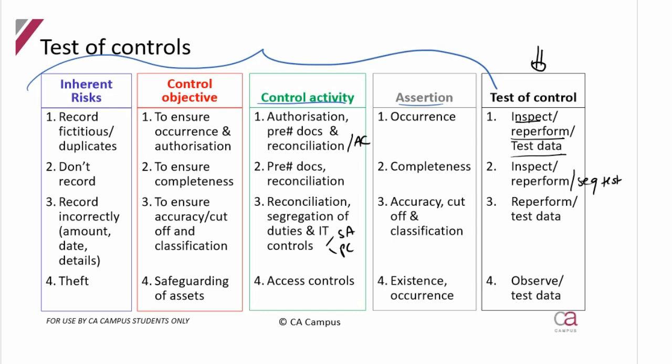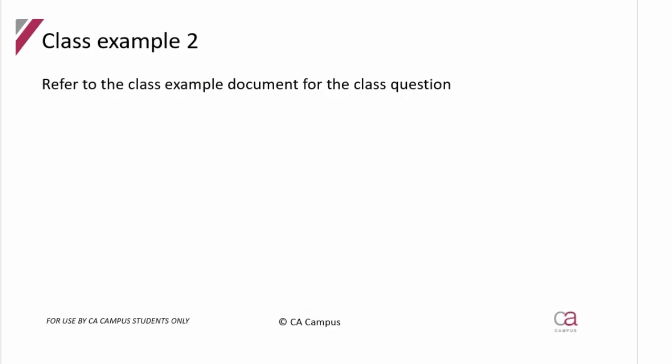For the risk of theft, the controls are safeguarding of assets, physical access controls, and logical access controls to protect information. You can observe the physical access controls and test the logical access controls through test data — attempt to gain access with the wrong passwords and you should not be allowed.